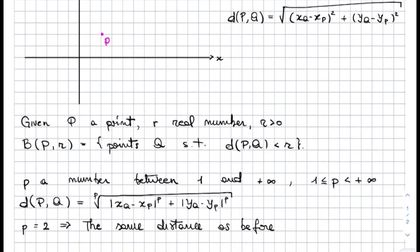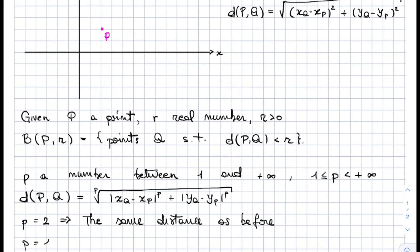Moreover, if you take p equal to 1, then you get the distance between p and q is given by the modulus of (xq minus xp) plus (yq minus yp). And this is the taxi metric we defined at the end of the last video. So these distances, which depend on the integer p we fixed, recover when we fix p equal to 1 and p equal to 2, the two distances we had already seen.